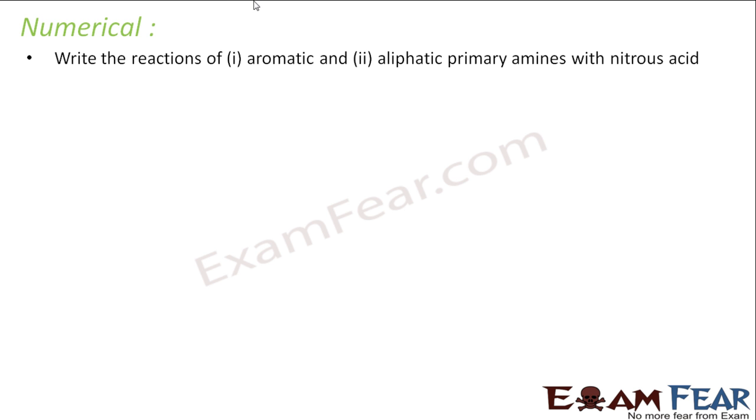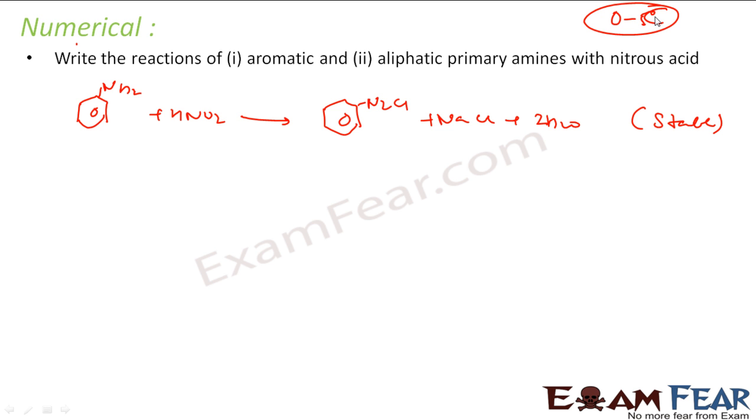We will write the reactions of aromatic and aliphatic primary amines with nitrous acid. For aromatic amines, if you react with HNO2 - that is nothing but NaNO2 and HCl - it will give you diazonium salt. This is, let's suppose, benzene diazonium chloride. You get NaCl also and water molecules. This is stable at 0 to 5 degrees Celsius for some time.